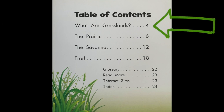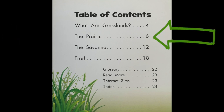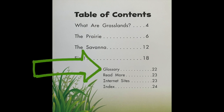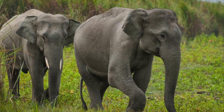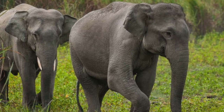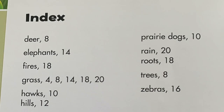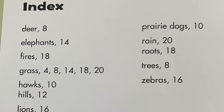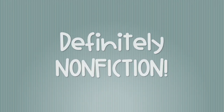The next section is The Prairie, and you can find that on page six. If you keep going down the Table of Contents, you can see that there's a glossary and an index. So we have real pictures, a table of contents, a glossary, and an index — so we know this for sure is a non-fiction book.